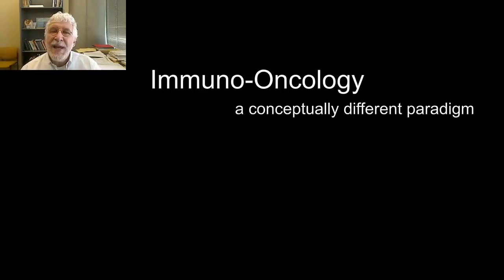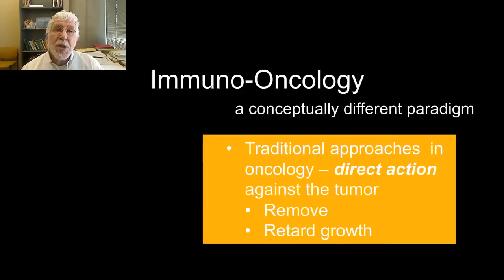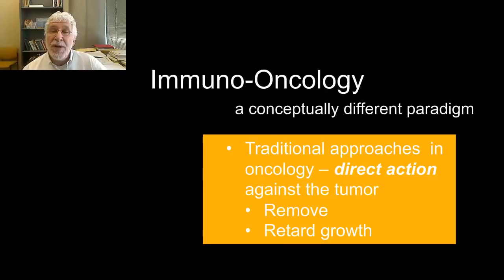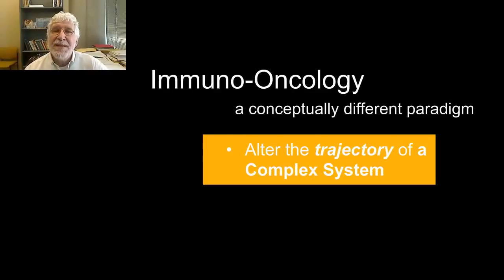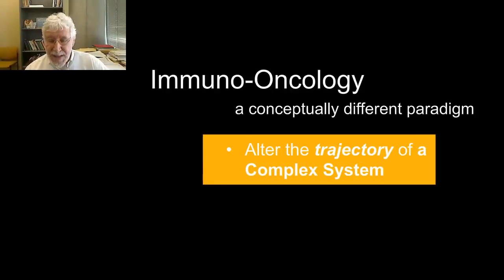Immuno-oncology is a conceptually different approach. In traditional oncological advances — from surgery through our targeted precision medicine interventions — our approach has been direct action against the tumor: surgically remove it, chemotherapy kills it, targeted precision medicine retards its growth. Immuno-oncology actually approaches the problem differently — it alters the trajectory of a complex system through the manipulation of the immune network. The immune system is itself a complex network of interacting components, a quintessential complex adaptive system that is interconnected, self-regulating, and has a dynamic interaction with the tumor itself.